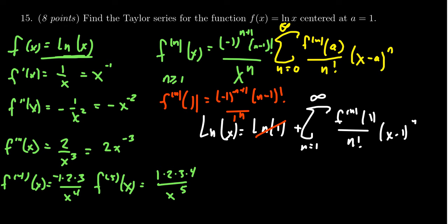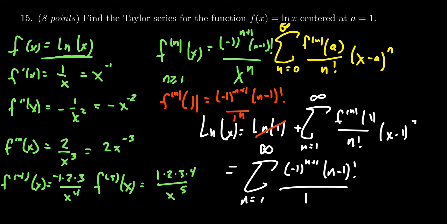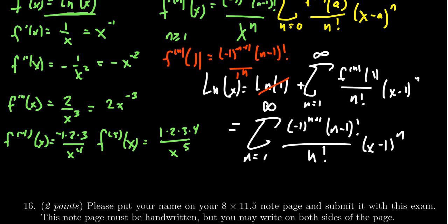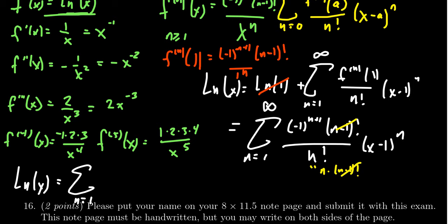Making those simplifications, the Taylor series is the sum from n equals one to infinity of negative one to the n plus one, times n minus one factorial on top, over n factorial on the bottom, times x minus one to the n. The n factorials simplify because n factorial equals n times n minus one factorial, so those cancel. In the end, the Taylor series expansion for the natural log at one is the sum from n equals one to infinity of negative one to the n plus one over n, times x minus one to the n.